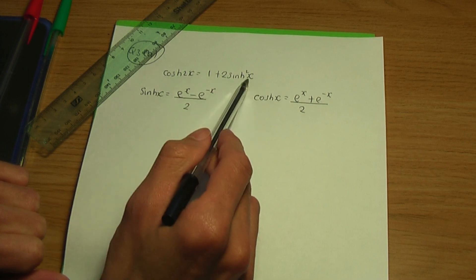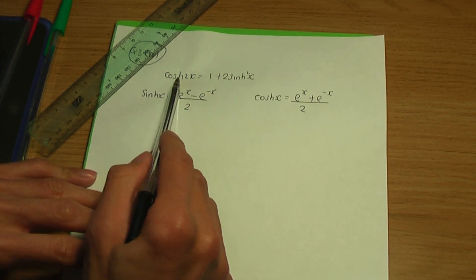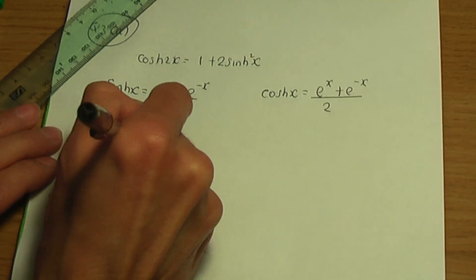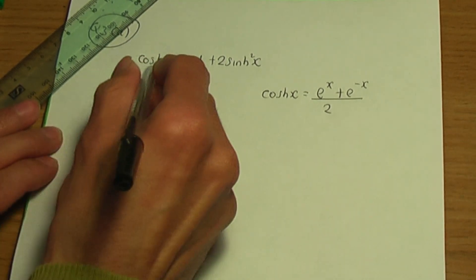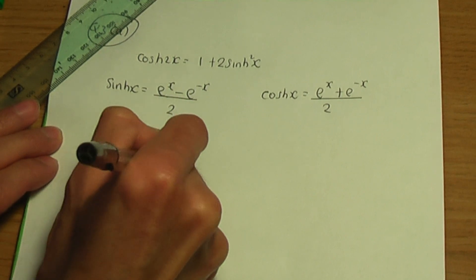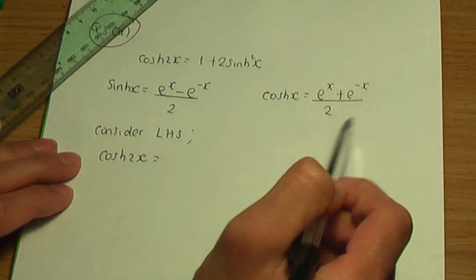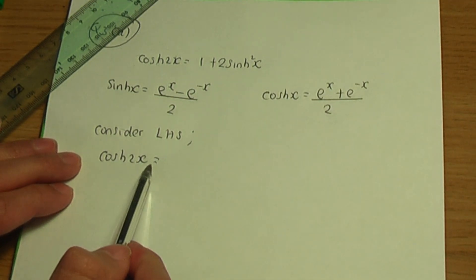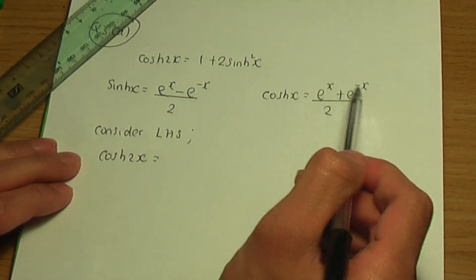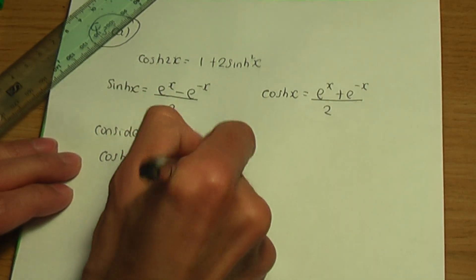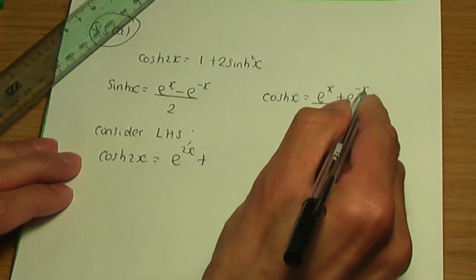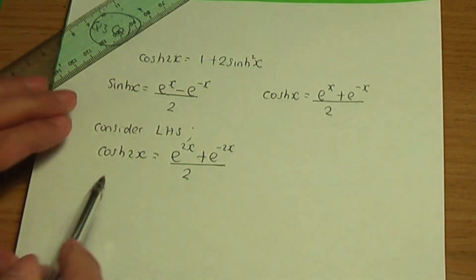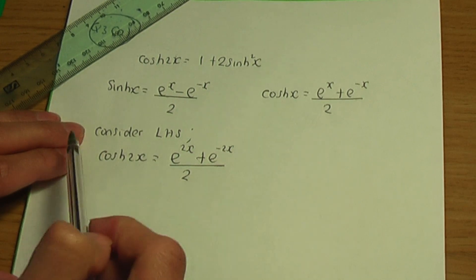To prove a hyperbolic identity, we need to prove that the left-hand side is equal to the right-hand side. The left-hand side is hyperbolic cos 2x. Using the definition of hyperbolic cos and replacing x by 2x gives us e to the 2x plus e to the minus 2x all over 2.